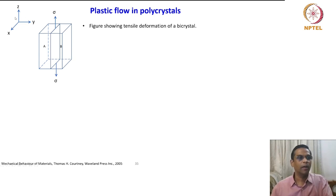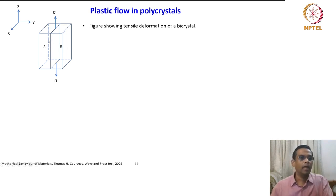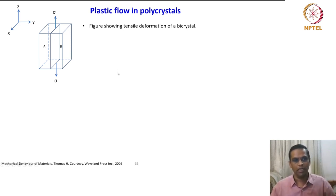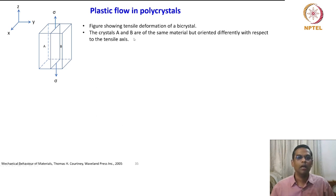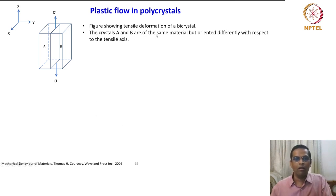Let us now consider a bicrystal A and B — there are only two crystals joined together. This bicrystal is being subjected to tensile loading, tensile deformation of a bicrystal. The crystals A and B are of the same material, but oriented differently with respect to the tensile axis.